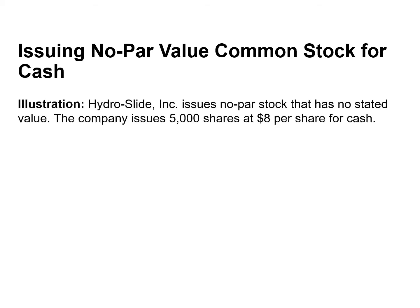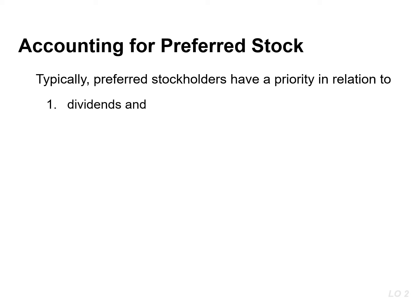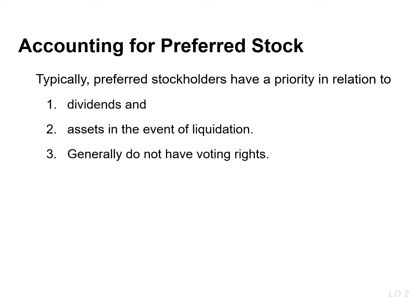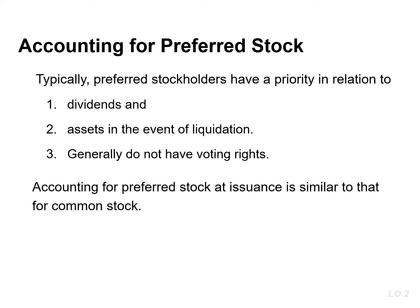If this company issues 5,000 shares at $8 per share, the entry would result in a debit to cash for $40,000 and a credit to common stock for the same amount. A corporation may also issue an additional class of stock called preferred stock. When a corporation has more than one class of stock, each paid-in capital account title should identify the stock to which it relates — preferred or common stock.